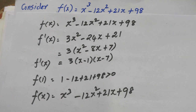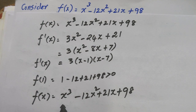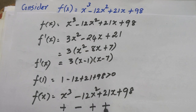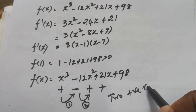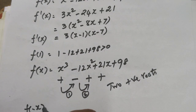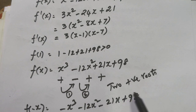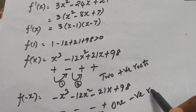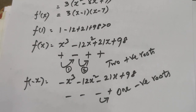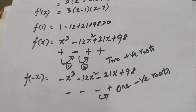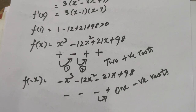Applying Descartes' Rule of Signs to f of x: the signs are plus, minus, plus, plus — giving two sign changes, so there are two positive real roots. Substituting minus x gives minus, minus, minus, plus — one sign change, so there is one negative real root.